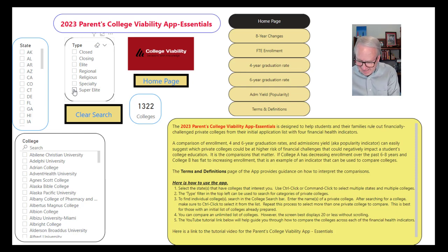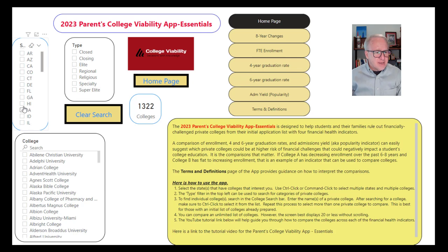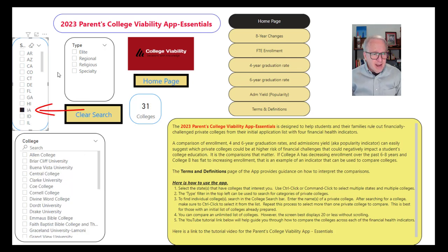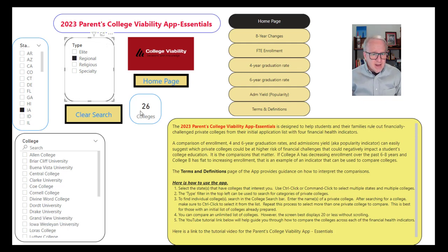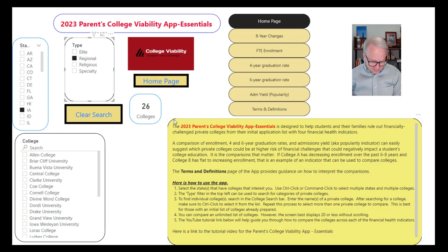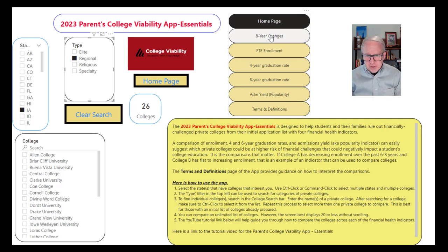Let's take a look at the app itself. I'm going to grab the state of Iowa — click on Iowa — and look at the regional colleges. So I'll select regional and there are 26 colleges. Here's a couple of ways to use the app to navigate. If you want to look at all of the colleges in Iowa, there are 26 of them, and we navigate from this bar in the middle of the screen. I'm going to click on eight-year changes.